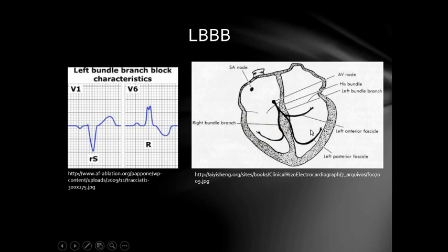Then the last thing you're going to have is the depolarization of the Left Ventricle. When the Left Ventricle is depolarizing, you get the second R-wave, called R-prime. Since it is taking a long time, you also get a deep S-wave in V1. Remember, R-waves in V6 and S-waves in V1 represent the left ventricle, whereas S-waves in V6 and R-waves in V1 represent the right ventricle. In bundle branch blocks, the ventricles are activated sequentially, not simultaneously.